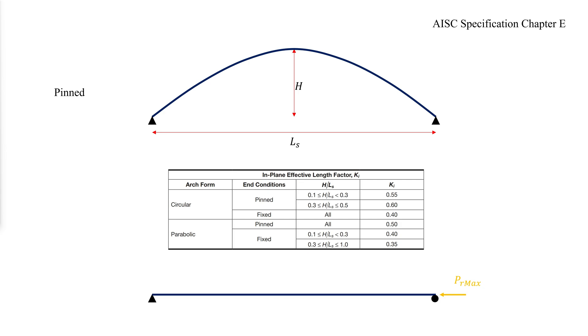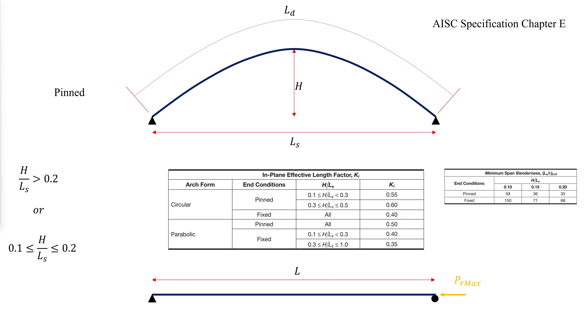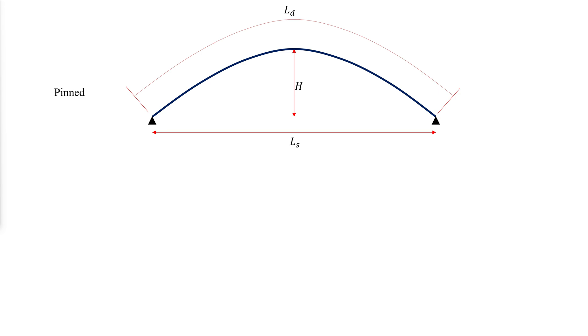In the specification equations, the developed length of the arc must be used instead of the straight member unbraced length. The effective length factors in the table are valid when h over ls is greater than 0.2, or when h over ls is between 0.1 and 0.2 and the minimum span slenderness values shown in the previous table are satisfied.